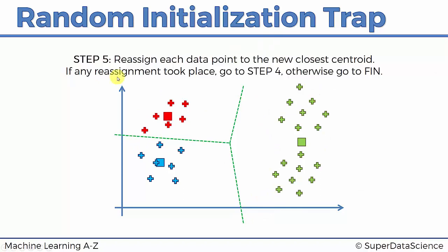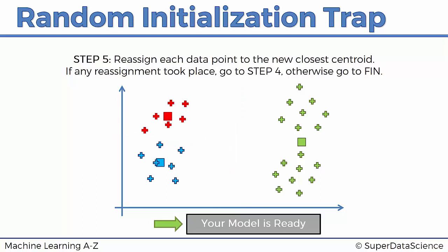So we don't go to step four. We instead go to finalizing the algorithm because it has converged. So there we go. That is our model. It is ready. And as a result, we have these three clusters.